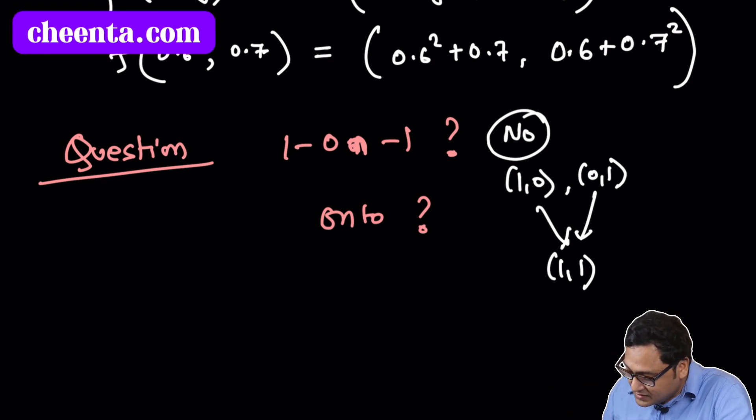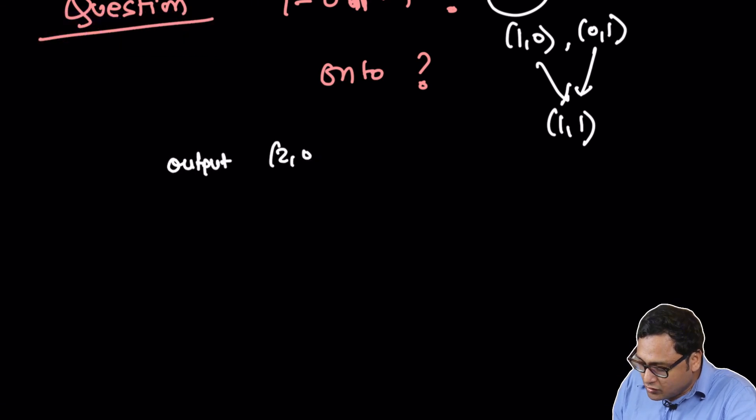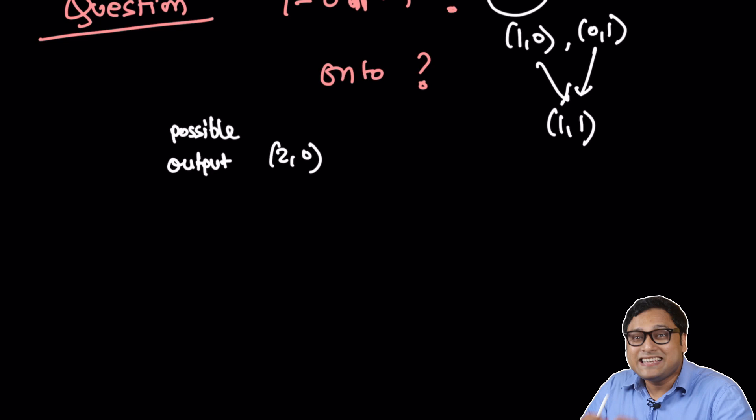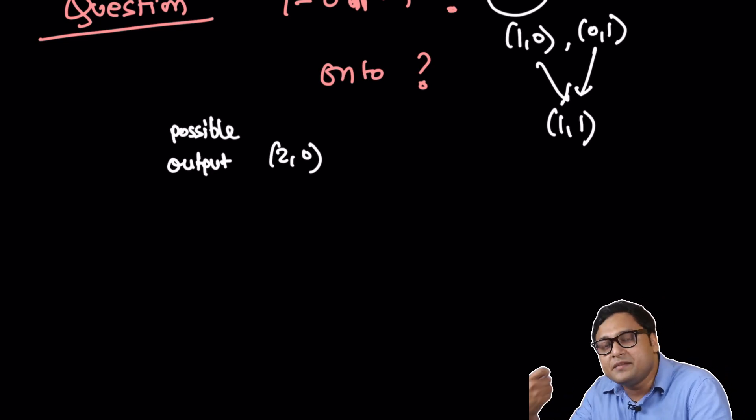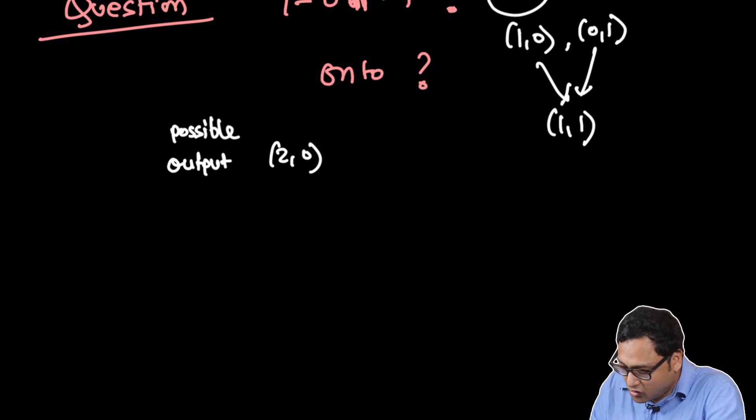Well, because if you take the output point 2 comma 0, a possible output point, this is a point in the co-domain. Is there some input that goes to that point? Is there an input point that goes to that point? Oh, what about 0 comma 2? Well, let's look at 2 comma 0.